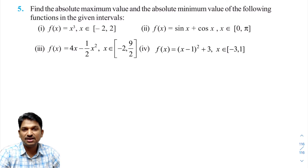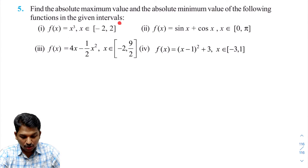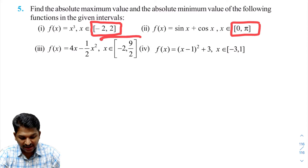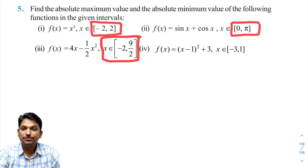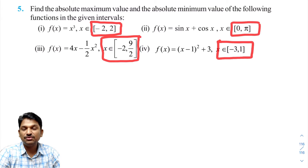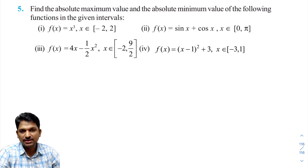There are four functions in total. All the functions are defined on a closed interval — this is important. While calculating absolute maxima and absolute minima, when the function is defined on a closed interval, we will follow a particular procedure.